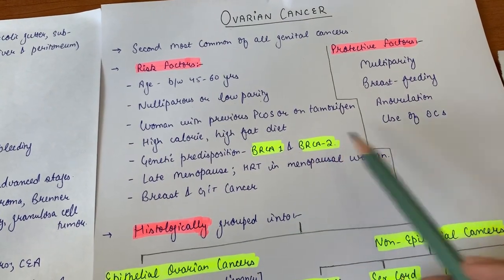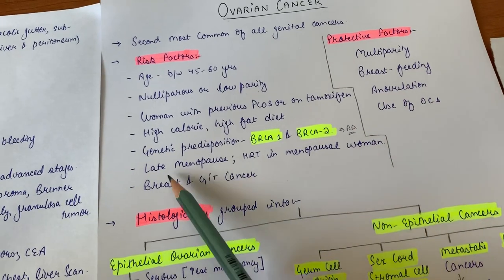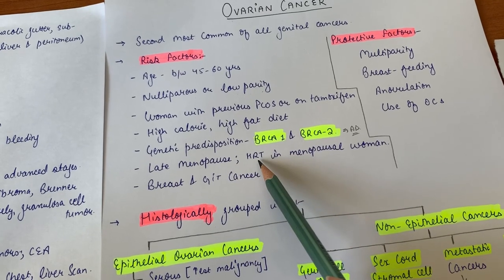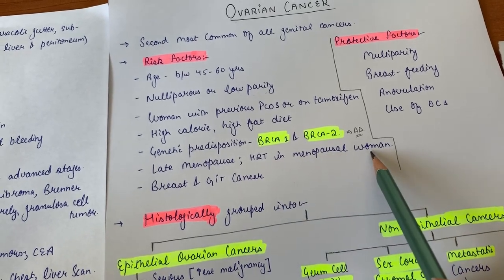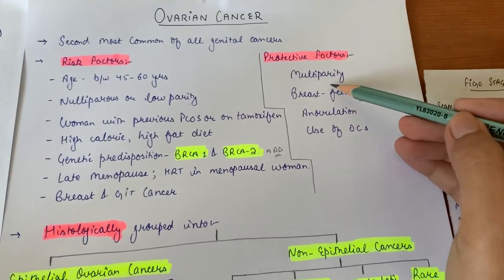Genetic predisposition with BRCA1 and BRCA2 genes - this predisposition usually has autosomal dominant inheritance pattern. Late menopause and hormonal replacement therapy in menopausal women also increases the risk, as does breast and GIT cancer. Protective factors here are multi-parity, breastfeeding, ovulation, and use of oral contraceptives.